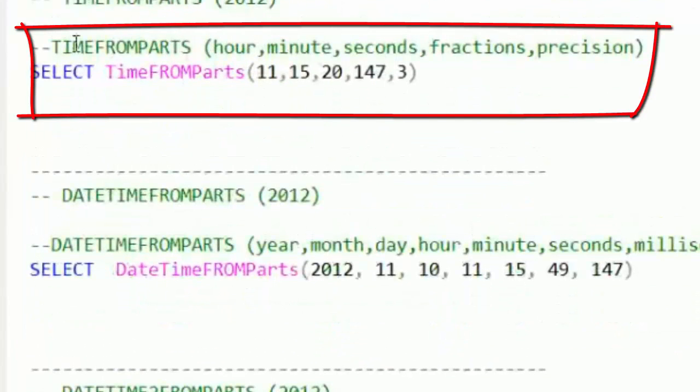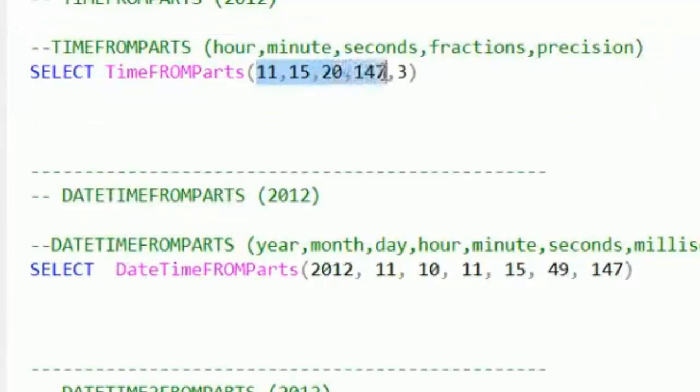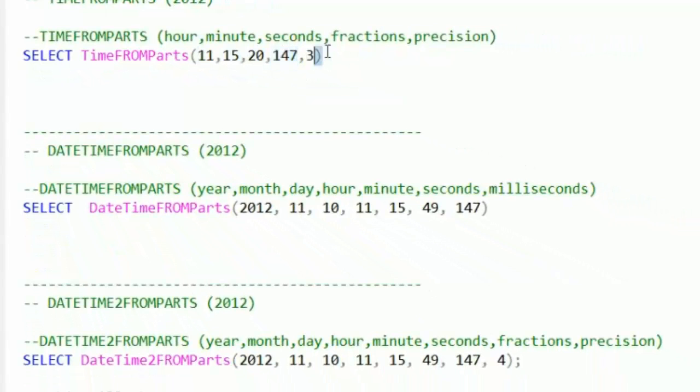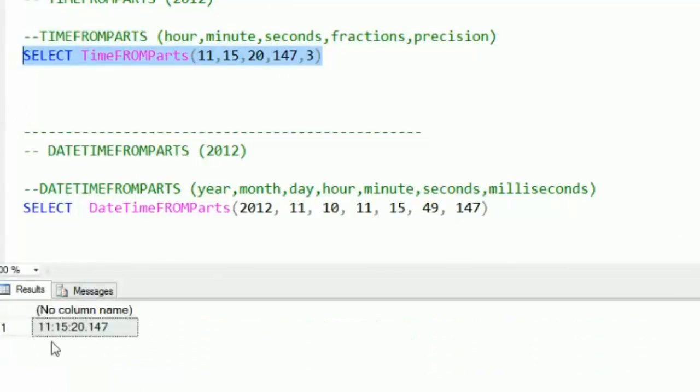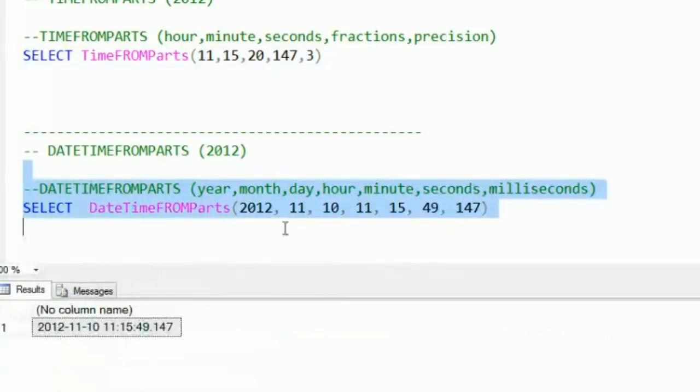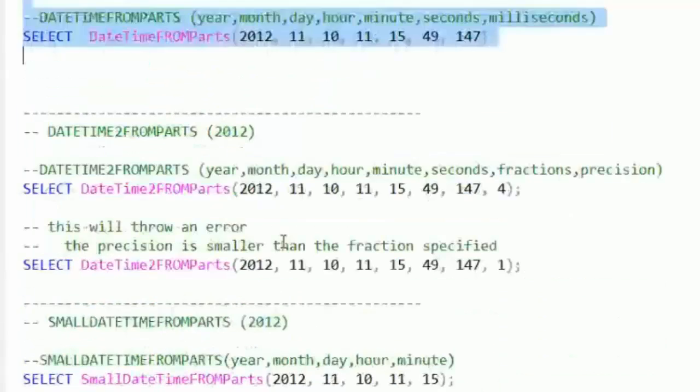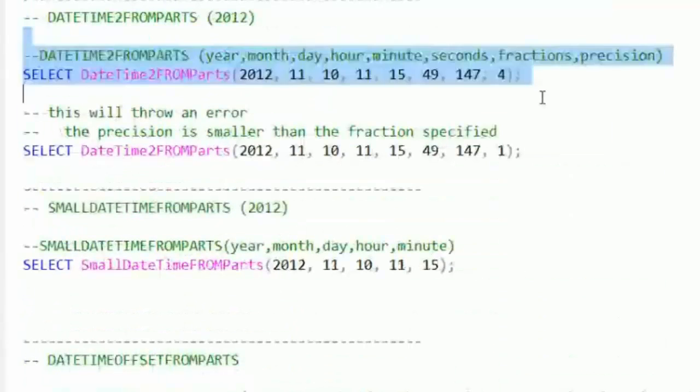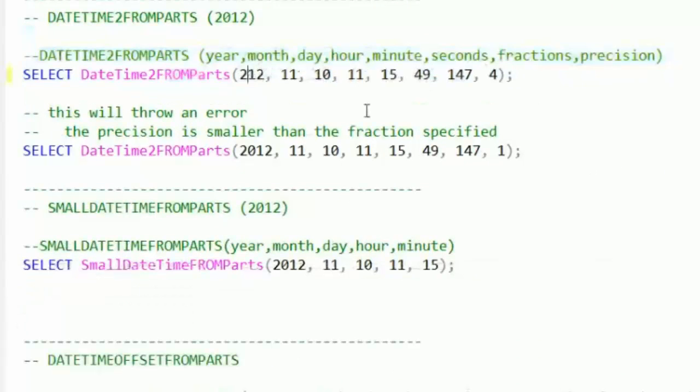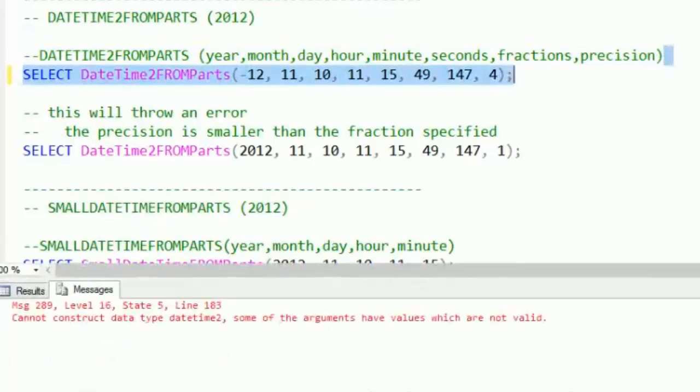Then we've got TIMEFROMPARTS. We're going to pass in 11:15 AM in 20 seconds with a fraction of 147 milliseconds with three digits of precision. There you go. We get it back as what you might have expected there, 11:15 in 20 seconds. DATETIMEFROMPARTS, similar thing, what you'd expect there. DATETIME2FROMPARTS, here we are. We get back to datetime2 with the precision there. Let's just say we're going to try and do the negative of year 12, so 12 BC, and see what we get. Oh no, it doesn't take negatives on the year.